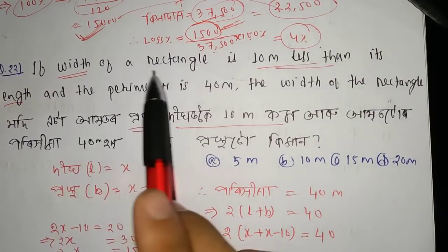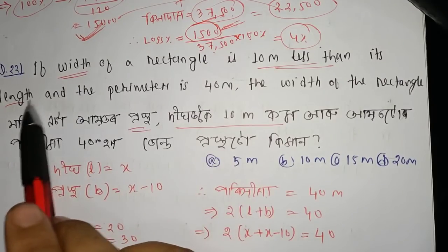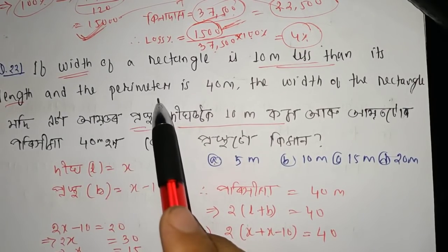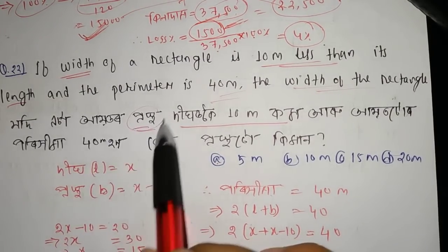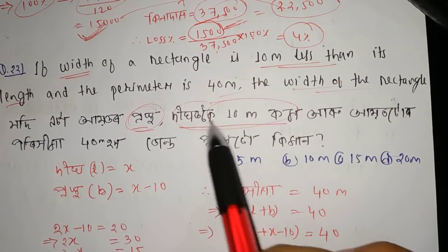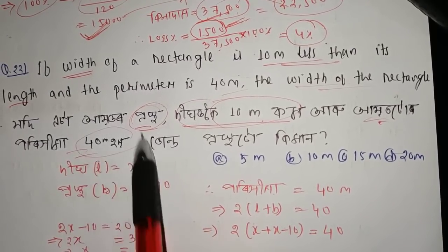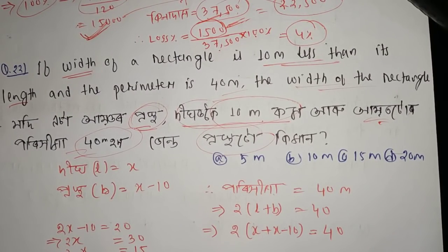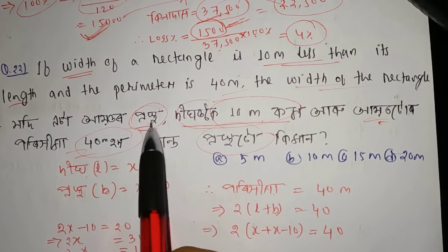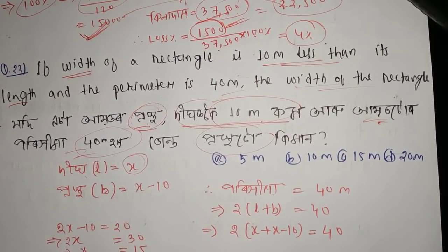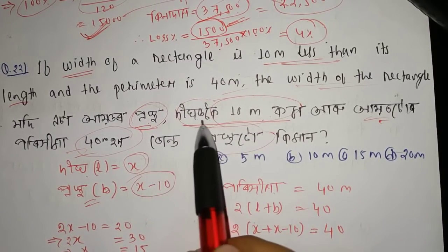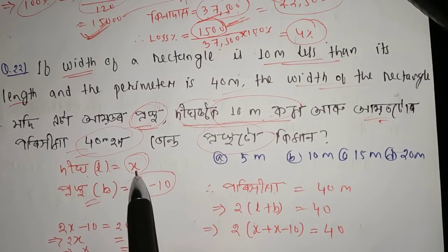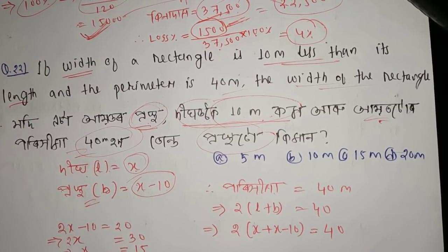If the width of a rectangle is 10 meters less than its length, and the perimeter is 40 meters, then the width of the rectangle is to be found. Let x be the length. The width is x minus 10 meters. So the problem has x less than 10 m — it's clear there is a variable setup.